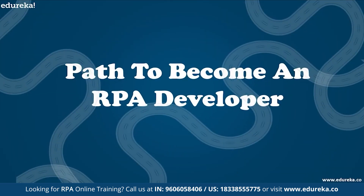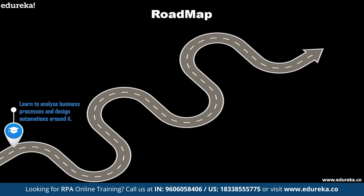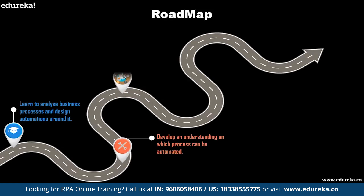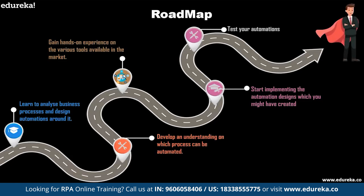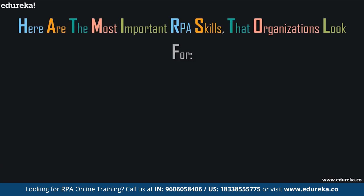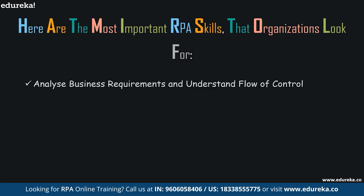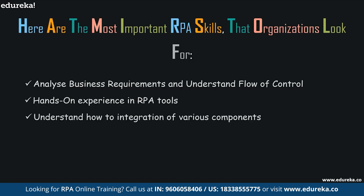To become an RPA developer, you need to learn to analyze business processes and design automations around them. You also need to develop an understanding of which processes can be automated, gain hands-on experience with the various tools available in the market, and start implementing automation designs. You should also be able to test your automations to ensure they are ready. Key RPA skills organizations look for include: analyzing business requirements, understanding the flow of control, hands-on experience with RPA tools like Blue Prism, UiPath, and Automation Anywhere, the ability to integrate various components, and minimal coding skills are required.